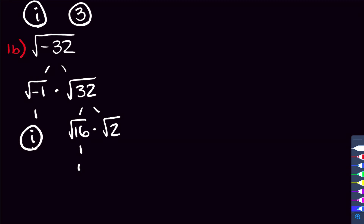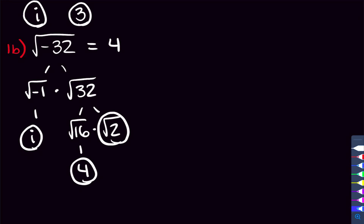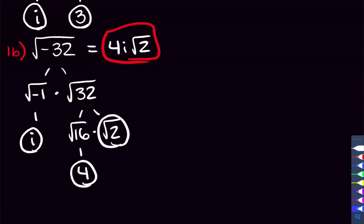The square root of 16 is 4, so we get a 4 and an i. The square root of 2 can't be simplified further. Combining everything, we get 4i times the square root of 2, and that's the answer to problem 1b.